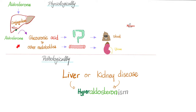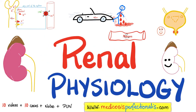After aldosterone performs its function, the liver metabolizes it — breaking it down into glucuronic acid and others — then sends it to the kidney for excretion, with part ending up in the stool. That's why liver disease or kidney disease can cause hyperaldosteronism. This would be called secondary hyperaldosteronism, since the problem did not originate in the adrenal cortex. To learn more about kidney function, download my renal physiology course at medicosisperfectionist.com.